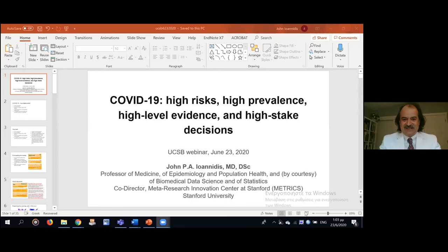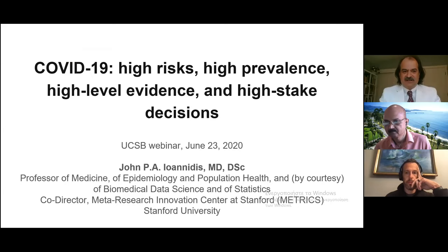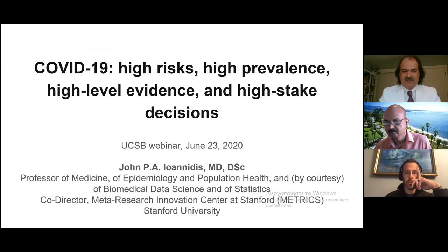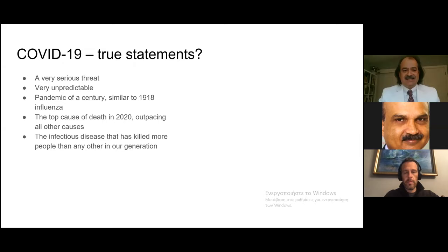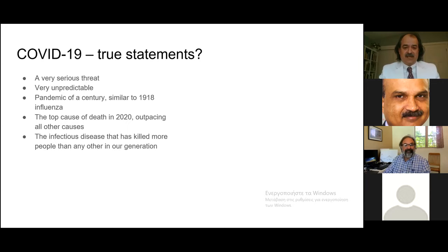What I'm planning to discuss is dissecting some data on COVID-19 in terms of risks, prevalence, evidence, and decisions, because all of these are interrelated. Are these true statements about COVID-19? It is a very serious threat. It is very unpredictable. It is the pandemic of a century, similar to the 1918 influenza. It is the top cause of death in 2020, outpacing all other causes. It is the infectious disease that has killed more people than any other in our generation.